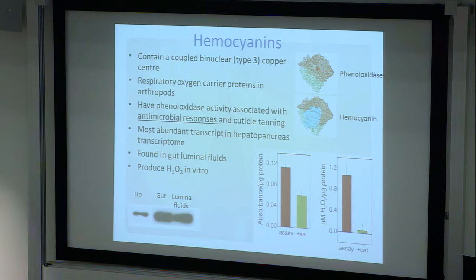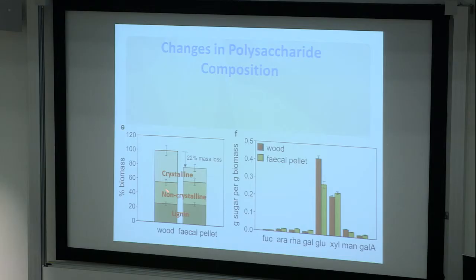We hypothesize that the source of the hydrogen peroxide in the system ought to be coming from something like a peroxidase, but there was nothing like that in the transcriptome. But we did have these hemocyanins, which are oxygen transporters but have also been shown to be involved in antimicrobial responses and cuticle tanning in arthropods. We've shown for the first time that you find hemocyanins in the gut and in the luminal fluids of the guts. Hemocyanins are actually getting in there on the wood. We've shown that they can function as phenoloxidases and that they produce hydrogen peroxide.